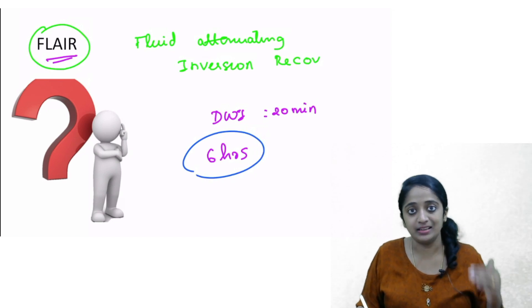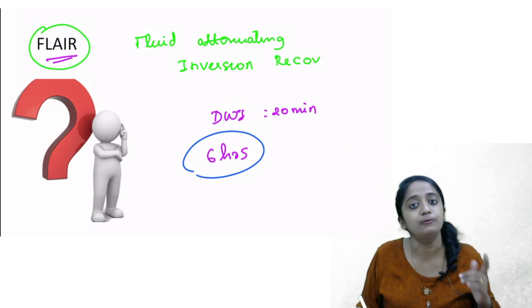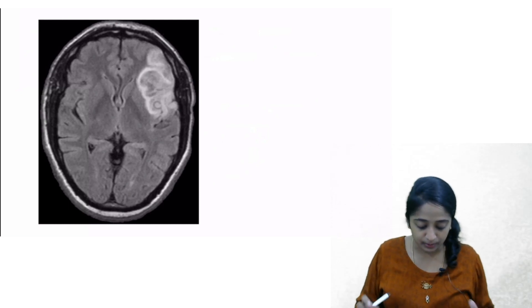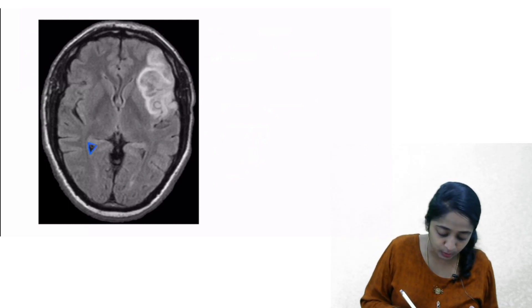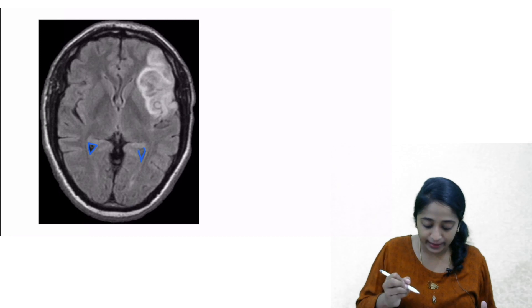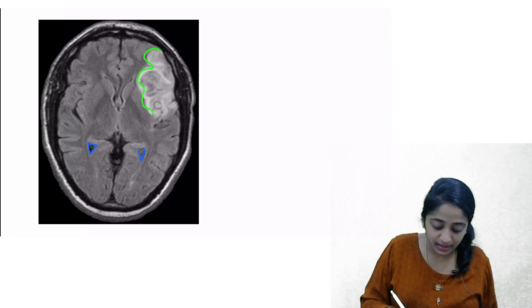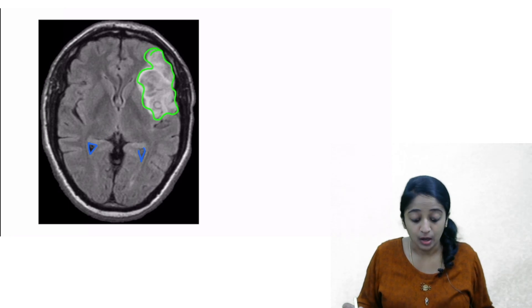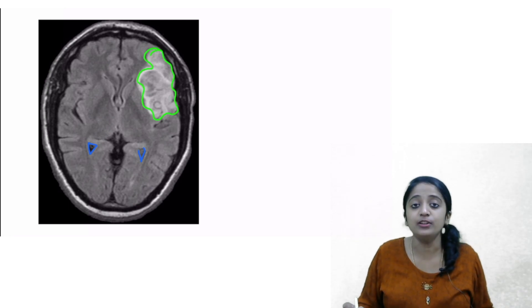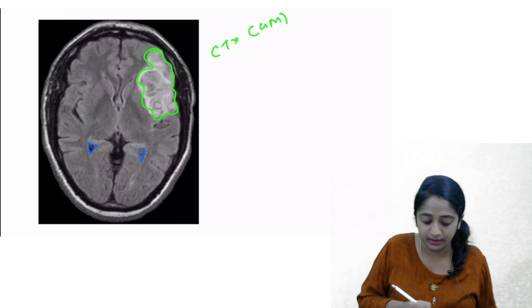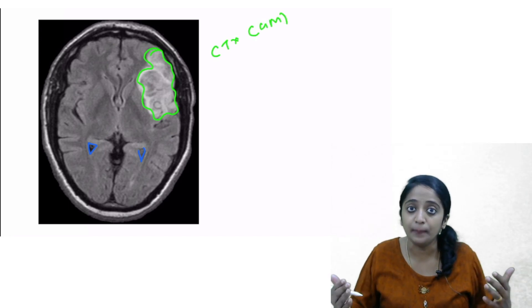Now let's see what you're going to look for in the FLAIR sequence. Here is a FLAIR image. You can see that the fluid signal within the ventricle — CSF — is suppressed. If you look carefully, you can see hyperintensity involving the left side of the brain parenchyma, specifically the cortex as well as the white matter, following a territorial pattern.